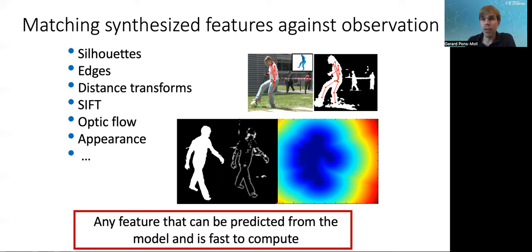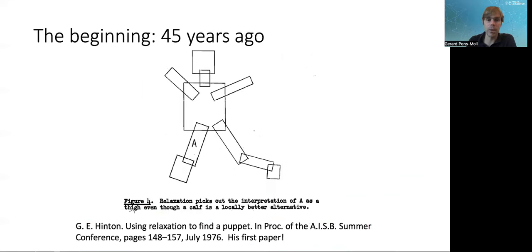The algorithms more or less look at these different components. Now let's look at a little bit of the history of human body models. It all started many years ago, as far as 45 years ago.